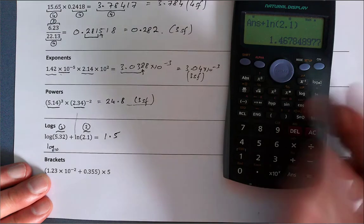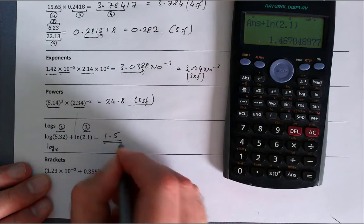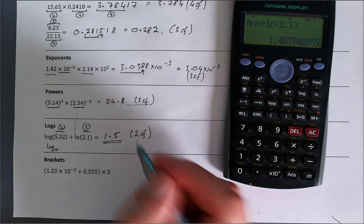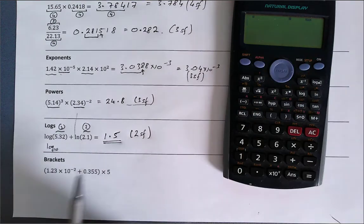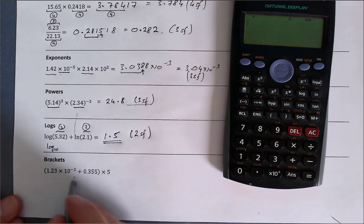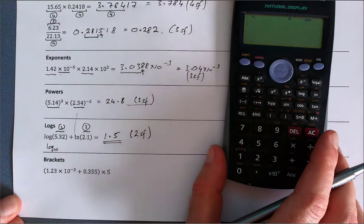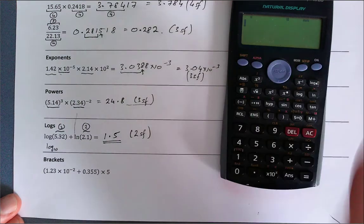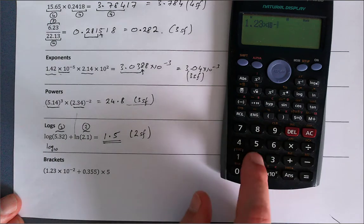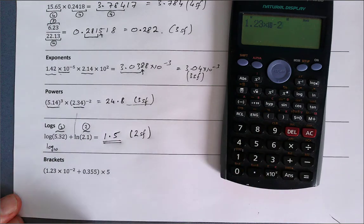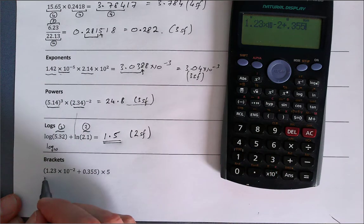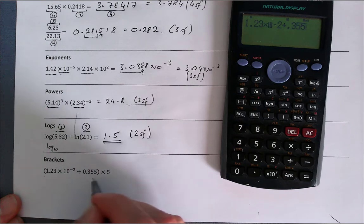Finally, we've got brackets. Now if you're uncertain with calculators, what we suggest is that you do this in stages and not all at once in one go. What does that mean? Well, I can say 1.23 times 10 to the power of minus 2, the first bit, plus 0.355. Okay, the bit in brackets is the bit that we do first. So I don't multiply this last bit first because the brackets are saying do me first, and then do the next operation.